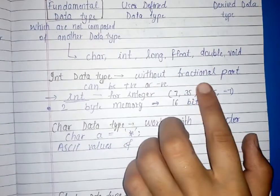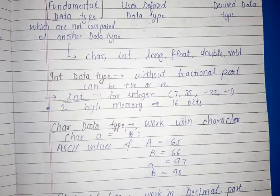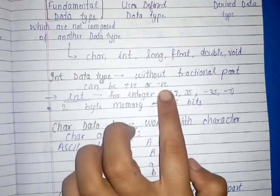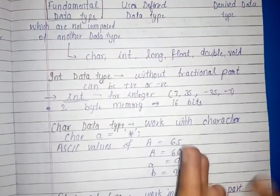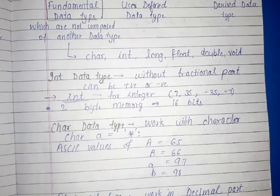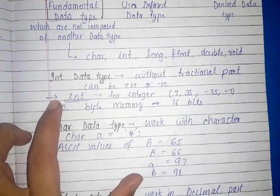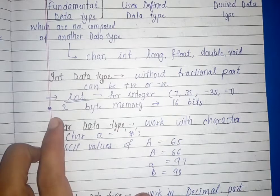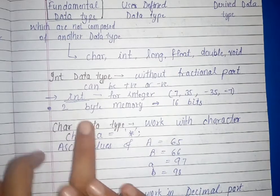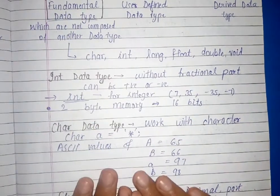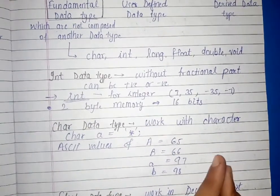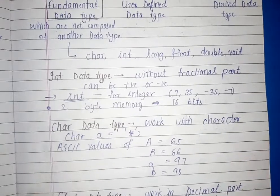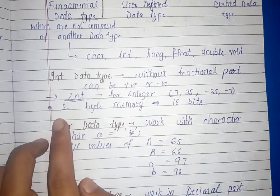The first one is int data type. Without a fraction part, and it is possible that there is a positive and negative. Integer. For example, 7, minus 7, 35, minus 35, which we study in the integer, we can put it all in it. And this is 2-byte memory. It means 2-byte means 16 bits. I will clear you here one more point. This can also come to the exam. 1-byte memory is equal to 8 bits. According to that, 2-byte memory is equal to 16 bits.